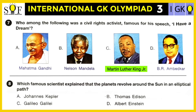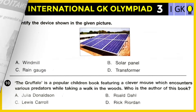Question number eight: Which famous scientist explained that the planets revolve around the Sun in an elliptical path — Johannes Kepler, Thomas Edison, Galileo Galilei, or Albert Einstein? The correct answer is Johannes Kepler. He proposed that the planets move in an elliptical orbit around the Sun.